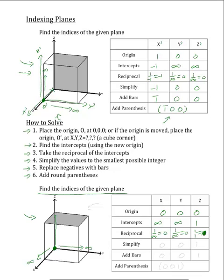The next step is to simplify these numbers to the smallest possible integer values. Zero, zero, and one are already at their smallest possible integer values, so they will remain the same. The next step is to replace any negative signs with bars. As you can see, there are no negative signs, so zero, zero, and one will again remain the same.